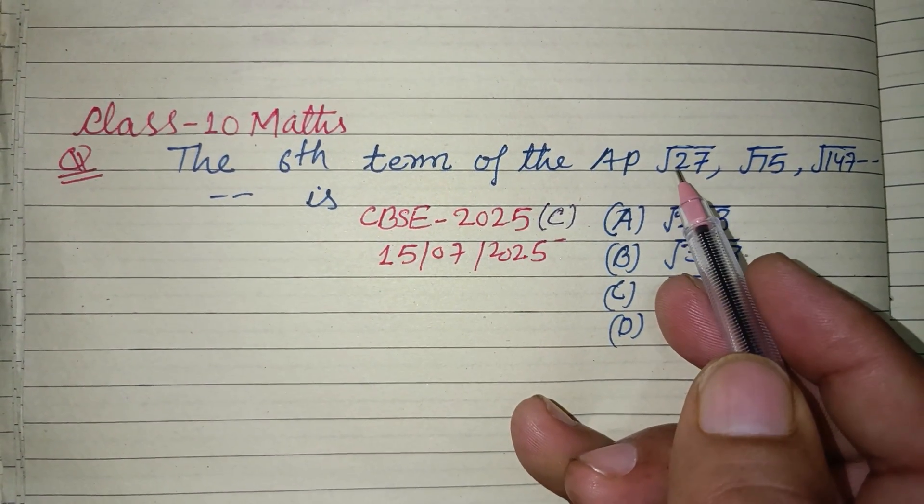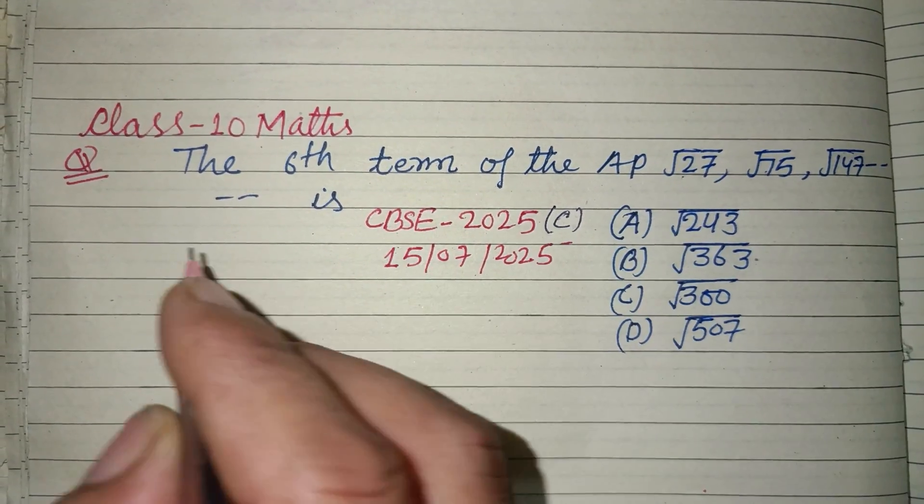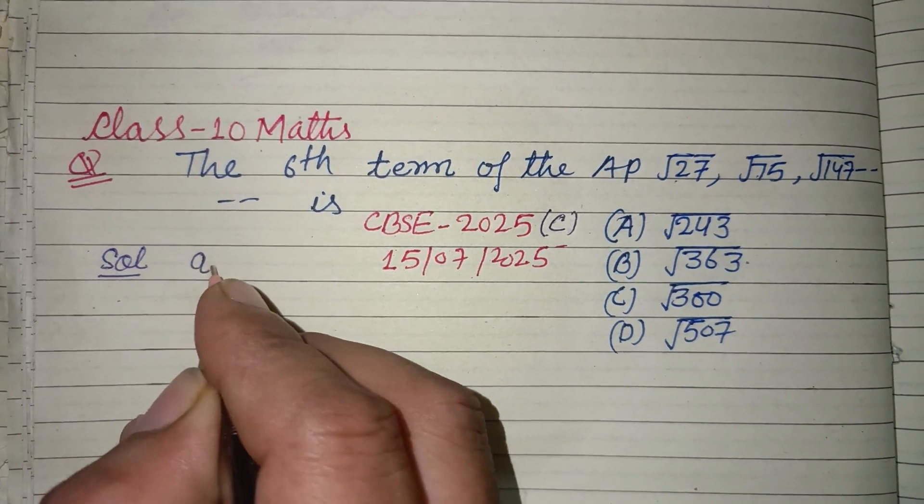of the AP: √27, √75, √147, and so on. Students, here the first term of the AP